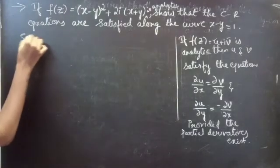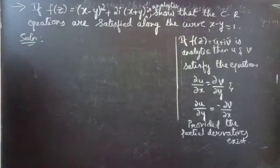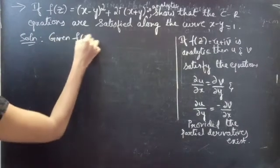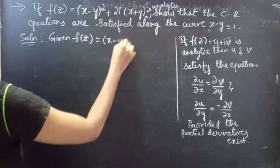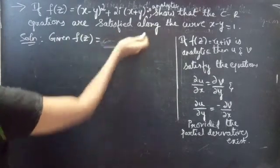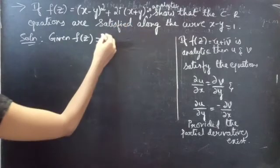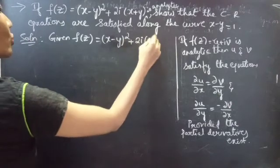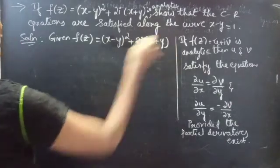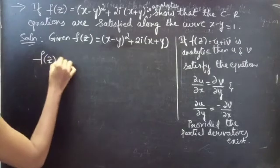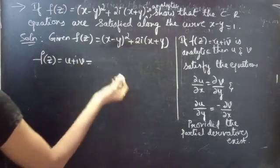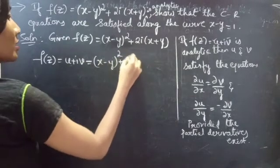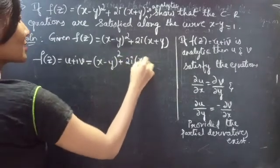Given: f(z) = (x - y)² + 2i(x + y). We know that f(z) = u + iv, and also f(z) = (x - y)² + 2i(x + y).